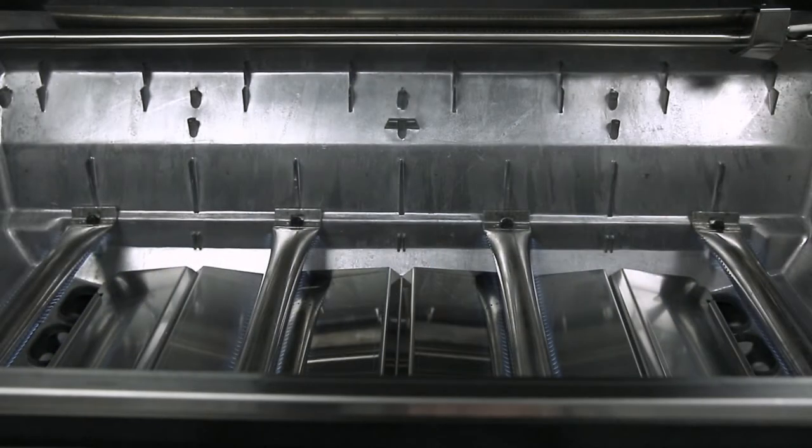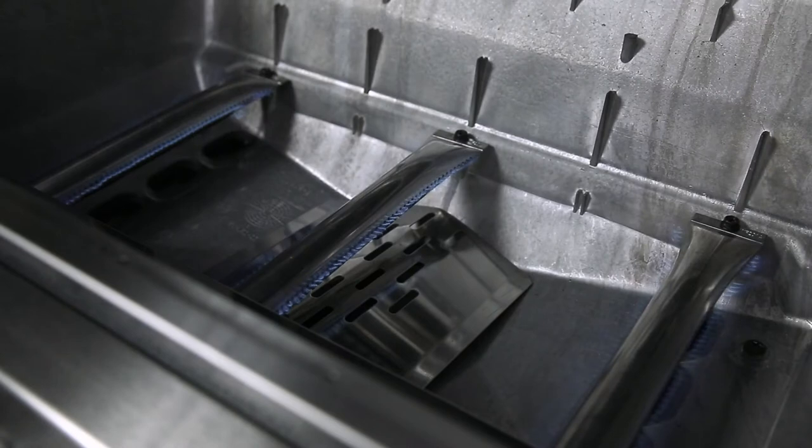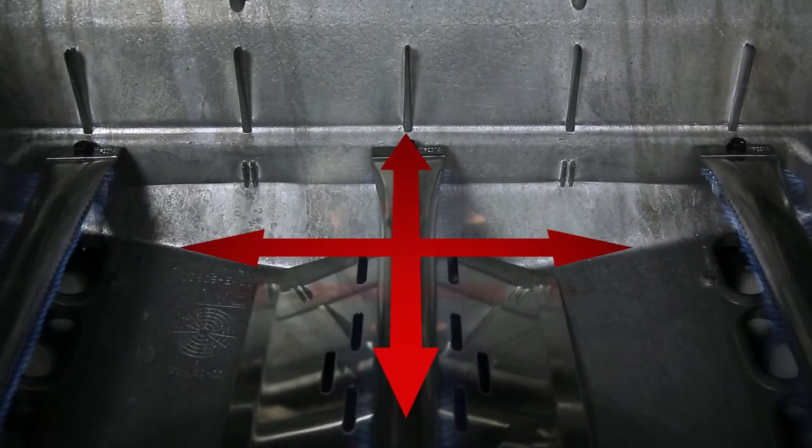Each burner has two ribbons of flame for a total of six or eight rows across the entire surface of the grill. This means that you get more flame and more heat per square inch and the ultimate in even heat distribution.